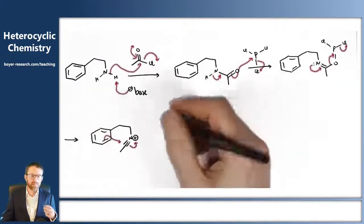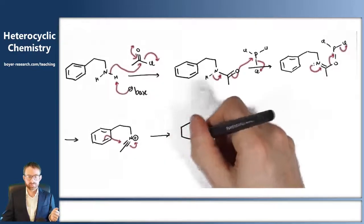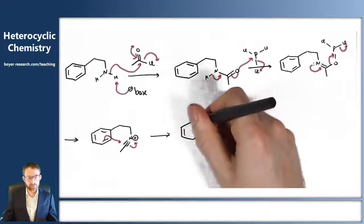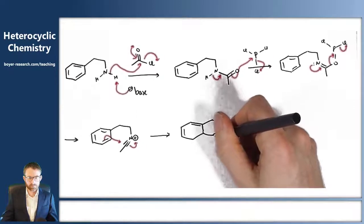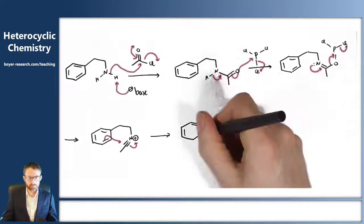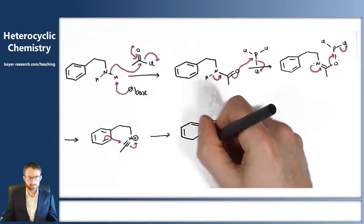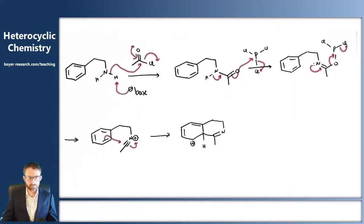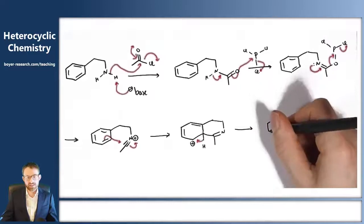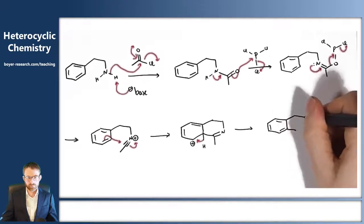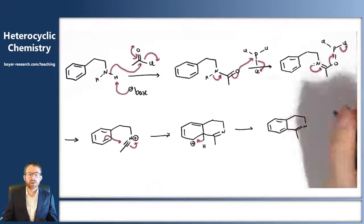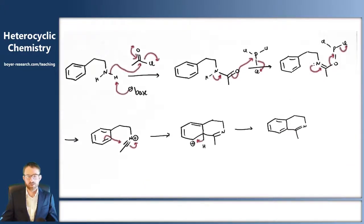We can get nucleophilic attack of the pi system, neutralizing the positive charge. This should briefly break the aromatic ring. We can restore aromaticity by losing the hydrogen from the position where we attacked, to give us our 3,4-dihydroisoquinoline product. This can be further oxidized if we want the quinoline.